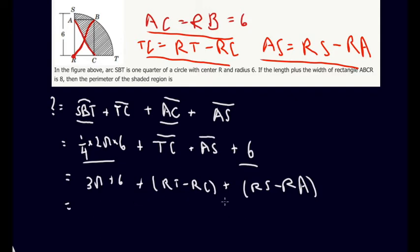Now, obviously, we can ignore these parentheses since we're just adding everything together. So we can rewrite this as 3π plus 6 plus... Now we know that RT is the radius of our circle. RT is equal to 6. And we know that RS is also a radius of our circle. So this is also 6. So this is 6 minus RC plus 6 minus RA.